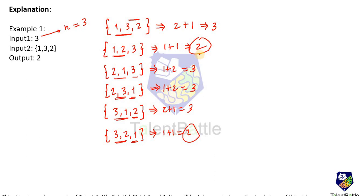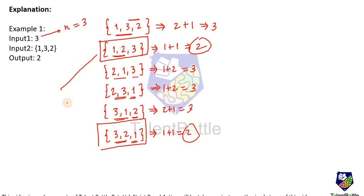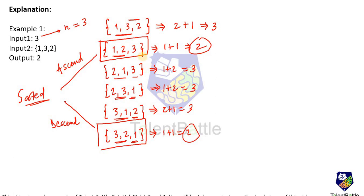Now the question is how to convert this into an approach. If you observe the pattern: the arrangements giving the minimum penalty are [1, 2, 3] and [3, 2, 1] — one is ascendingly sorted and the other is descendingly sorted. So we can use either ascending or descending sorting. By default, we can use the built-in sorting function which gives ascending order. If we sort the array in ascending manner and then calculate the sum of absolute differences, the value will be 2, which is our expected output.